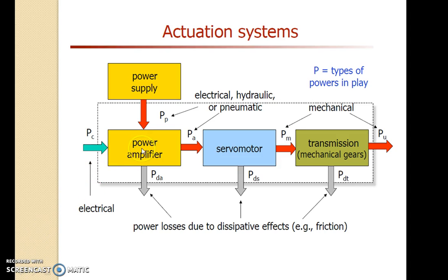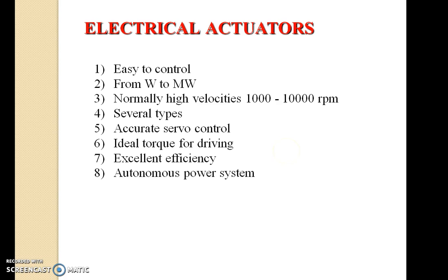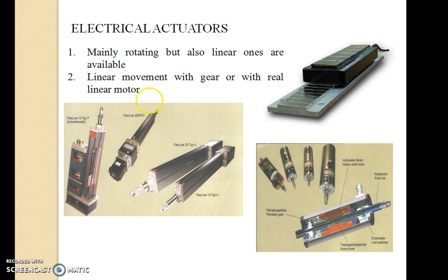The actuation system works as follows: a power supply is given to the power amplifier, then to the servo motor, and transmission occurs. The figure shows different electrical servo motors for robots — one driven by direct DC current, and a second which also uses DC current but has an electronic switching circuitry for control. Electrical actuators are easy to control; the range is from watt to megawatt, normally with high velocity of 1000 to 3000 RPM. They provide accurate servo control, ideal torque for driving, excellent efficiency, and autonomous power control.